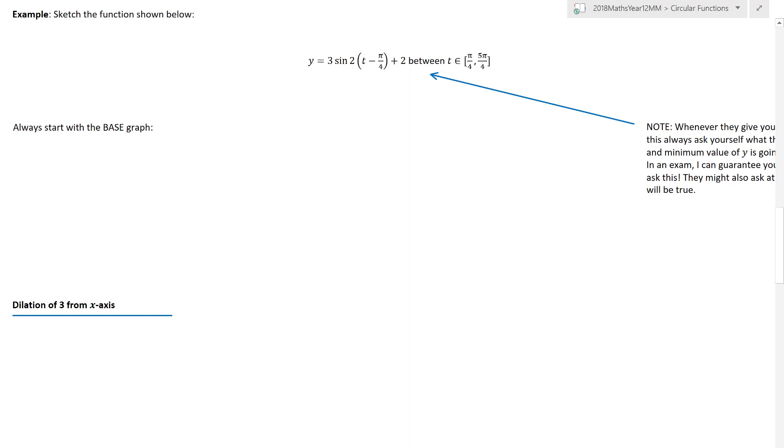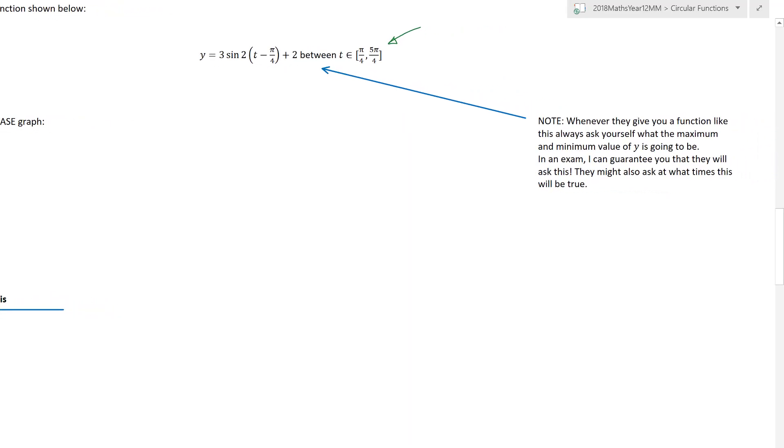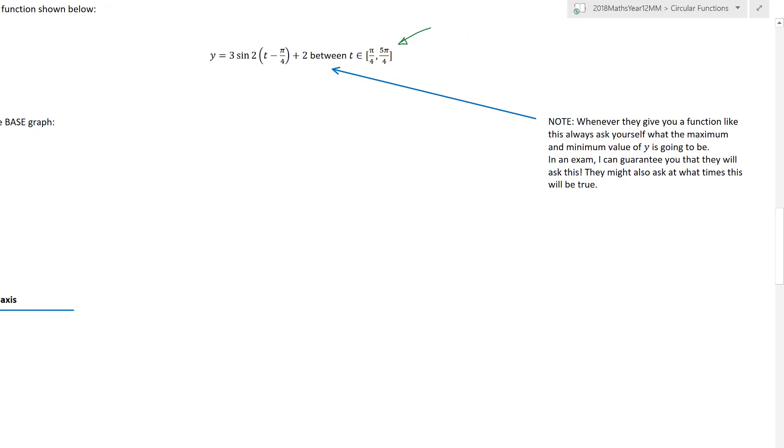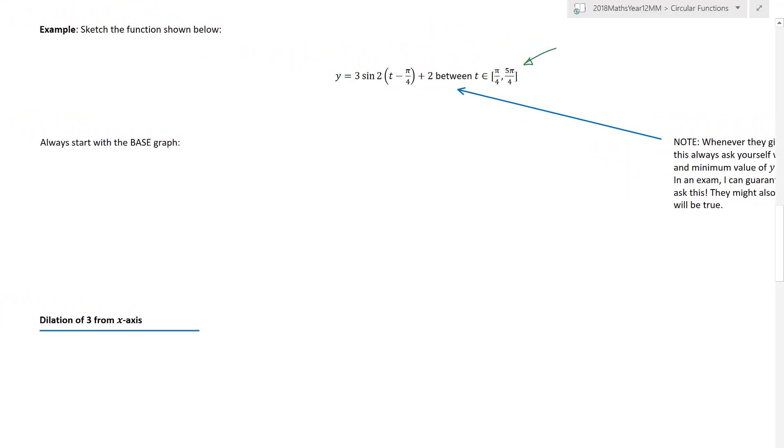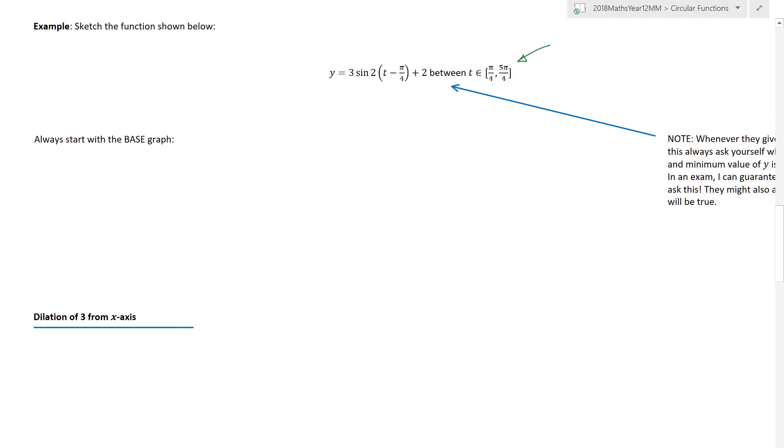Now again if you can identify what they are in the equation then you can absolutely draw these by breaking it down one by one. So here's an example. Let's sketch this function. 3 sin 2 open bracket t minus π/4 plus 2 and make it between π/4 and 5π/4. So they've actually limited my domain which is fair enough. So let's just see what I've written as a note. Whenever they give you a function like this always ask yourself what the maximum and minimum values of y is going to be.